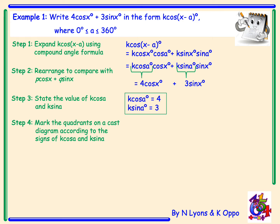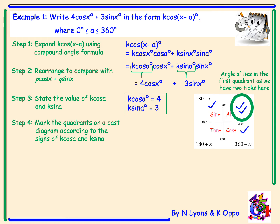We use this information in step 4 to mark the quadrants on a CAST diagram according to the values of k cos a and k sin a. Drawing our CAST diagram, we can see that k cos a is equal to positive 4, therefore cos is positive in A and C. And k sin a is equal to positive 3, therefore we tick S and A. Where we have two ticks, that is where our angle a lies — in the first quadrant.